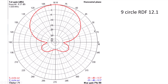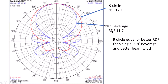If we compare the nine circle array with an RDF of 12.2 to a single wire beverage — the 918-foot long single wire beverage only has an RDF of 11.7. Within that range I'd say they're essentially equal. But actually the nine circle array even has a broader 3 dB beam width. I would submit this is a real argument for the benefit of small vertical receive arrays, especially compared to broadside phased arrays.